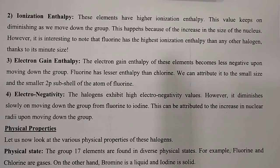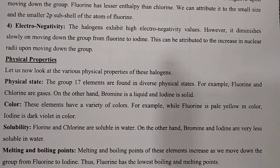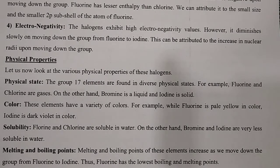Physical properties: The group 17 elements are found in diverse physical states. Fluorine and chlorine are gases; bromine is a liquid; and iodine is a solid — so all three states are found in group 17. In terms of color, these elements have a variety of colors: fluorine is pale yellow and iodine is dark violet. Regarding solubility, fluorine and chlorine are soluble in water, while bromine and iodine are very less soluble in water due to their larger size. The melting point and boiling point of these elements increase as we move down the group from fluorine to iodine; thus fluorine has the lowest melting and boiling point.